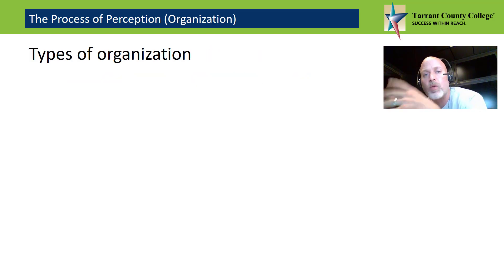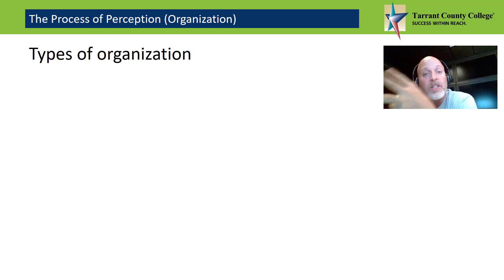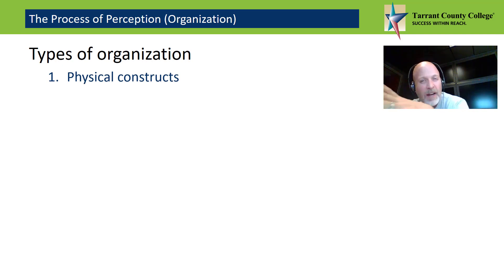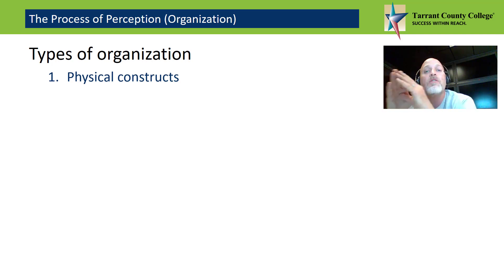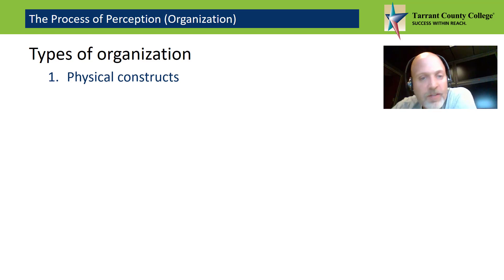Now, we use these four types, or schema, to classify information we notice about other people. We notice their role constructs, their physical constructs, interaction constructs, and psychological constructs. First, the schema that we use to classify information we notice about other people is the physical constructs. These emphasize people's appearance, causing us to notice objective characteristics such as height, age, ethnicity, and body shape, as well as subjective characteristics such as physical attractiveness.